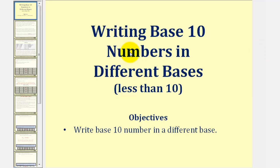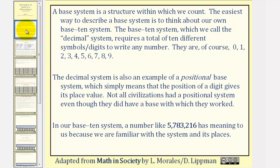Welcome to a lesson on how to write base 10 numbers in different bases. A base system is a structure within which we count. The easiest way to describe a base system is to think about our own base 10 system. The base 10 system, which we call the decimal system, requires a total of 10 different symbols or digits to write any number.